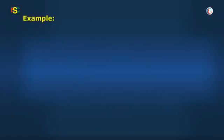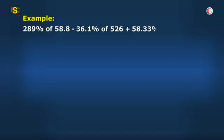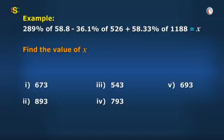Moving now to the next sum, it says 289% of 58.8 minus 36.1% of 526 plus 58.33% of 1188 equal to X. So, find the value of X and your options are given on the board.